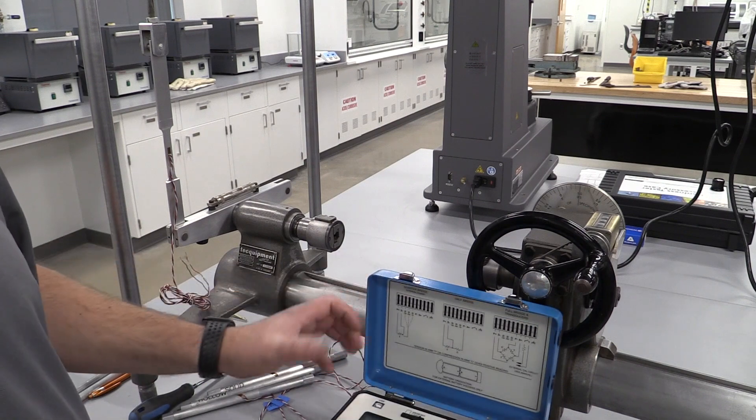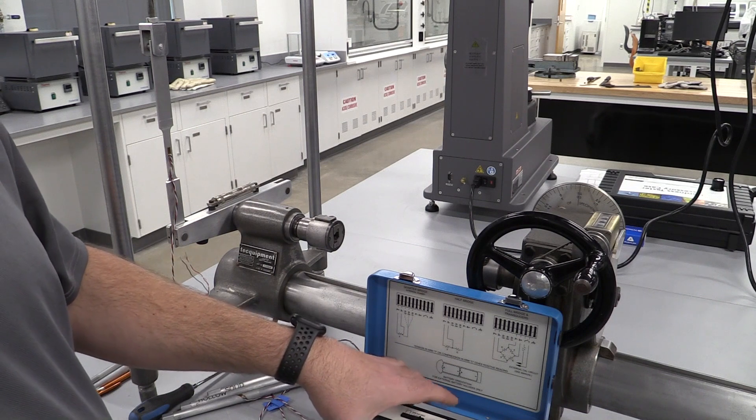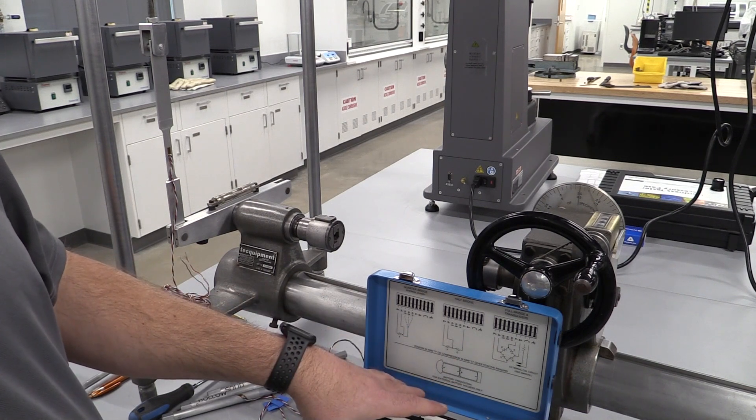So that's gonna take us to the point of introducing this unit. It is a P3 strain indicator unit and we're just gonna go over the basics of how to use this for this lab. This thing will do a lot more stuff than what we're gonna do.